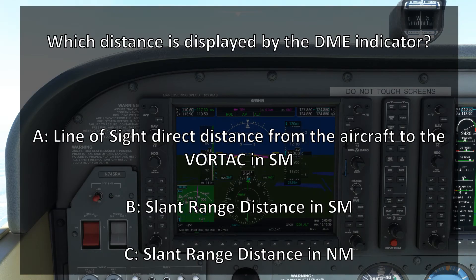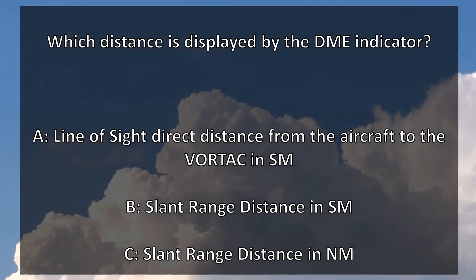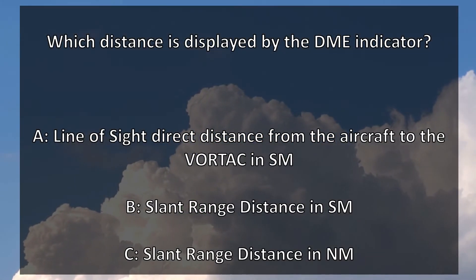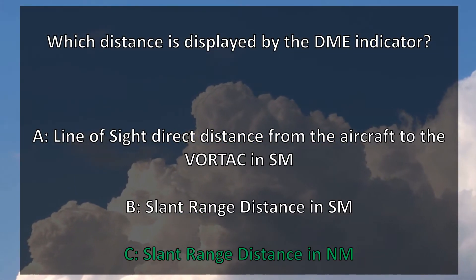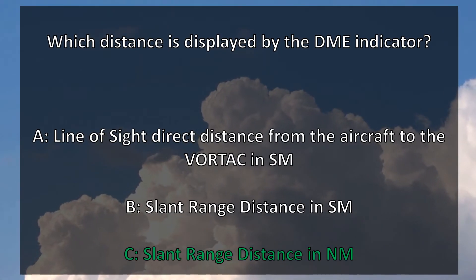So the answer to the question — which distance is displayed by the DME indicator — is C: slant range distance in nautical miles.